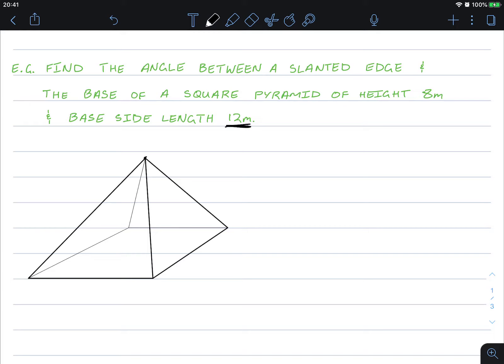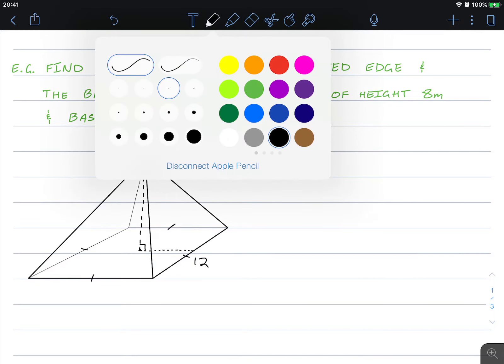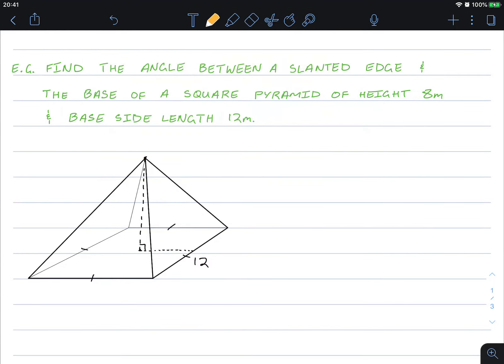Now we have the base length of 12. So these sides of the triangle are 12 and the height of the pyramid is 8 meters. So from the top to the center of the base, that height is 8. Let's see if I can't make that into orange. Let's see that again. That's 8 meters high.